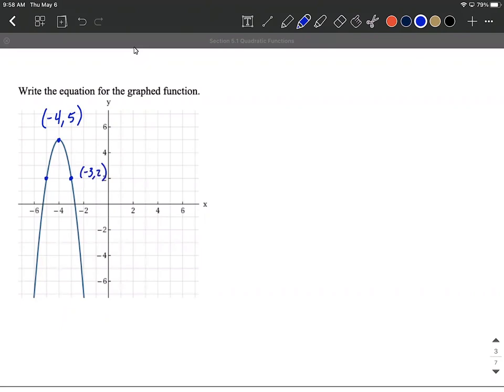All right, so as we take a look at this, let's first use that vertex. So our function is going to be a times - looks like to get to the vertex, we've moved everything from the vertex of the x² graph that starts at the origin at (0, 0). To get to the vertex where we're at, we move to the left four.